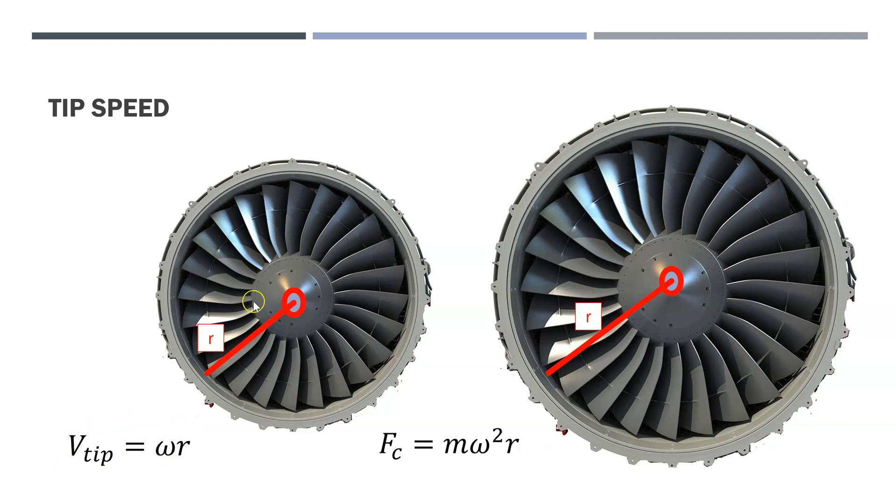This was a limiting factor on the bypass ratio. The other limiting factor was the centrifugal force. So the centrifugal force on the blades is the mass times the radians per second squared times the radius. So if the radius increases from this length to this length, then you can see there's going to be an increase in the centrifugal force.